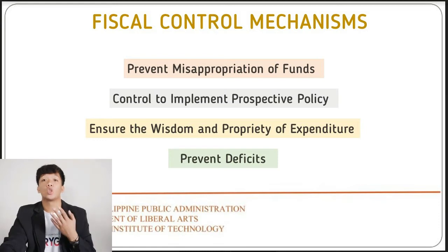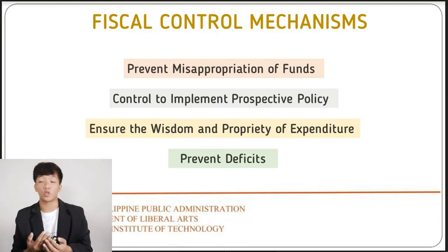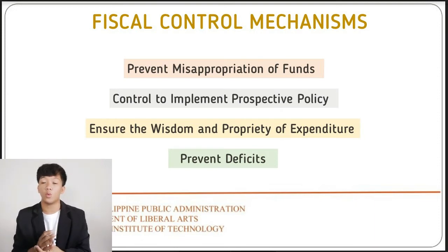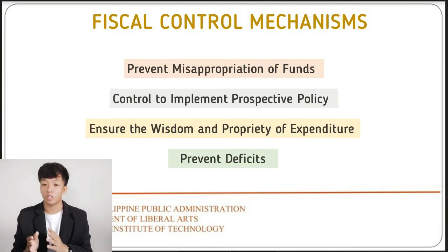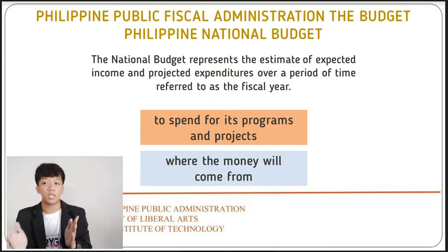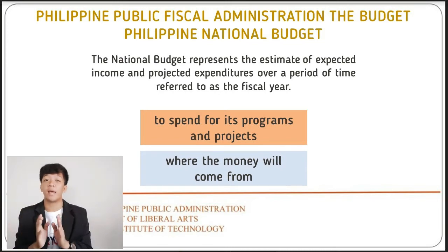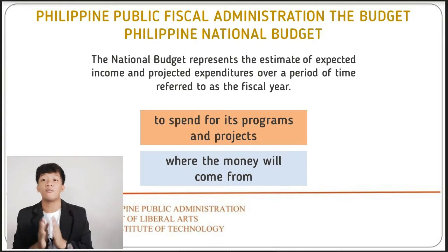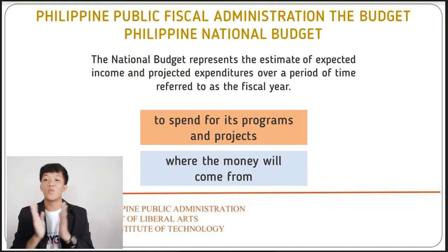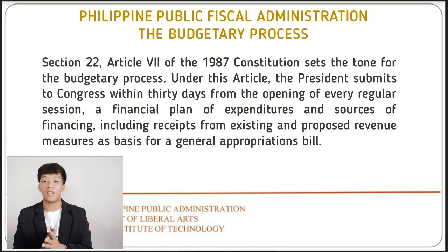And lastly is to prevent deficit. Fiscal supervision and control may be useful but should not unduly interfere with agency prerogatives to carry out programs mandated by the Constitution and the laws. The Philippine National Budget represents the estimate of expected income and projected expenditures over a period of time, referred to as a fiscal year — covering what to spend for programs and projects and where the money will come from. According to Section 22, Article 7 of the 1987 Constitution, this sets the tone for the budgetary process.